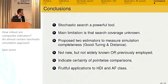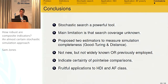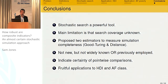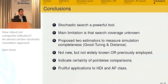Let me summarize. Stochastic search is a very powerful tool used in large numbers of applications. The main limitation, particularly in identifying robustness, is that the coverage of the search is unknown — how many draws are enough? I propose two estimators to measure the completeness of the simulation. They aren't completely new, but they're neither widely known nor have been used in this context before. We can use pointwise comparisons and assert them with almost a certain amount of confidence. The applications are quite fruitful. Thank you very much.